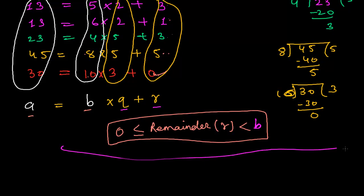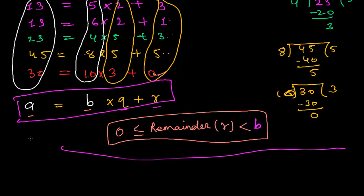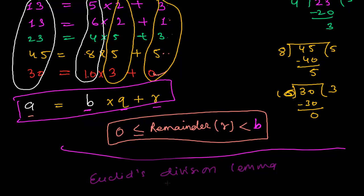So this is exactly called Euclid's division lemma: whenever we have two positive integers a and b, we get a unique pair of quotient and remainder, where the remainder is greater than or equal to zero but less than b. I hope you understand what Euclid's division lemma is. Next, we'll be learning Euclid's division algorithm.